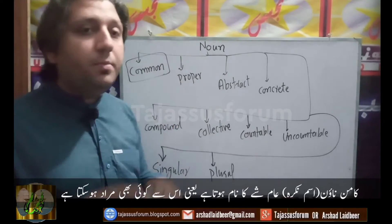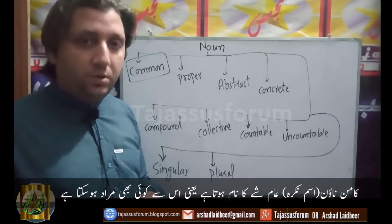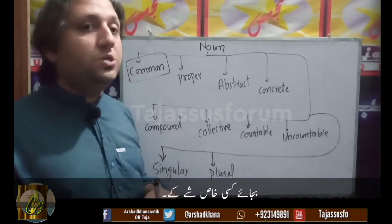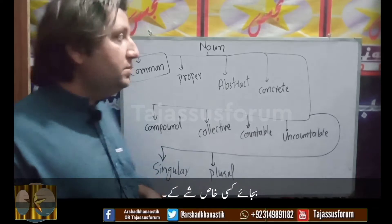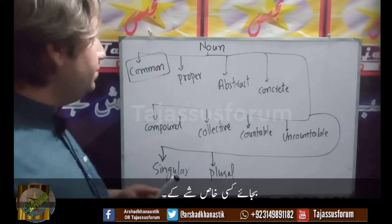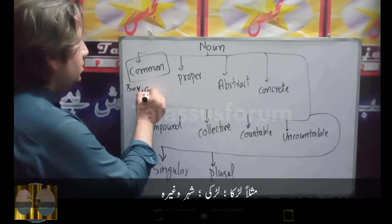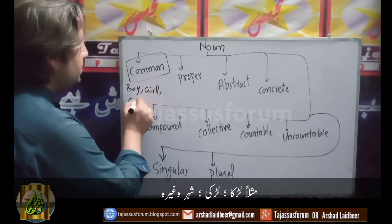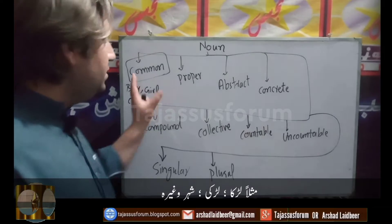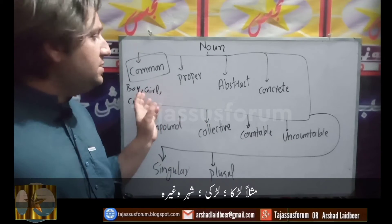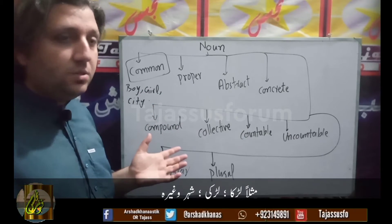Common noun is a noun which refers to things in general. We don't target someone specifically — this refers to general things. For example, if I say boy, girl, city — these are common nouns, because they don't tell us about a specific person or specific place.